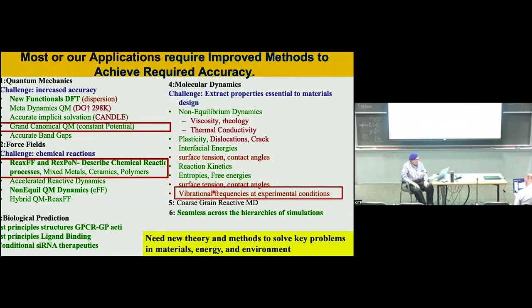We do develop methods. One approach — one method — is we do a lot of electrocatalysis. The problem with electrocatalysis is reactions that are at constant potential, whereas quantum mechanics operates at constant electrons. We'll talk about how we handle that.